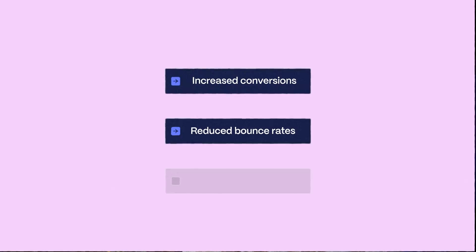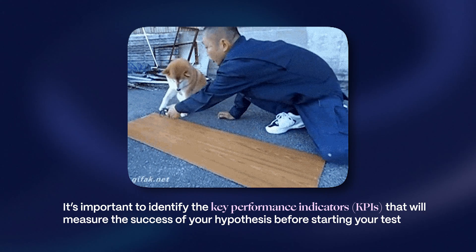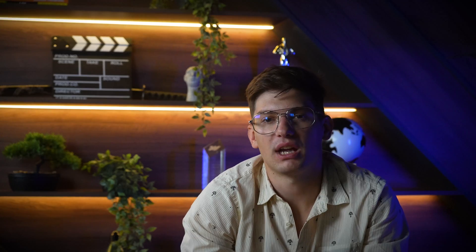Depending on what you're testing, objectives can differ and can include metrics such as increased conversion, but also reduced bounce rates or higher engagement rates. It's important to identify the key performance indicators — KPIs — that will measure the success of your hypothesis before starting your test. After this, we come to step one: setting up the A/B test.